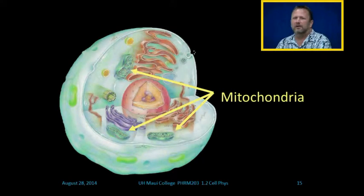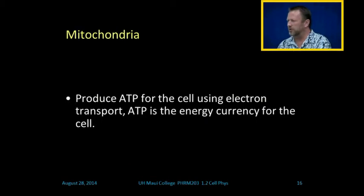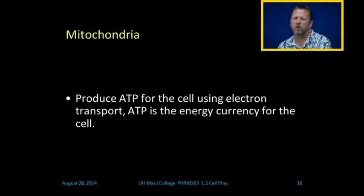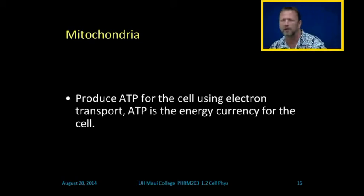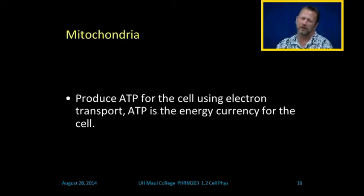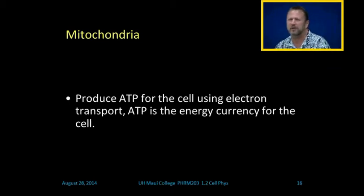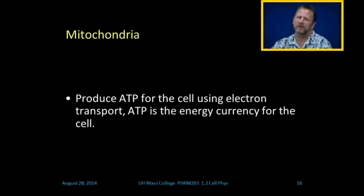There are the cartoons of our mitochondria. Mitochondria produce ATP for the cell using electron transport. Moving electrons is the key to energy utilization in cells — think of moving electrons as like the wind, and the cell and all its machinery like windmills capturing that energy. The end product of electron transport is ATP, which is our energy currency for the cell.